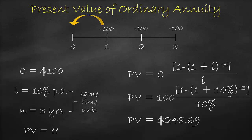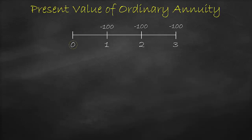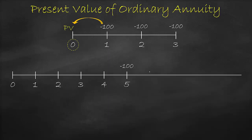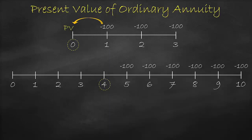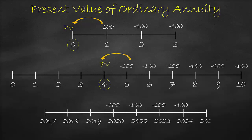Please note that the present value of the ordinary annuity formula is always one period before the first cash flow. For example, if my first equivalent cash flow is in year one, the present value will be at year zero. Or if my first equivalent cash flow is in year five, the present value will be in year four. Or if my first equivalent cash flow is in year 2020, the present value will be at year 2019.